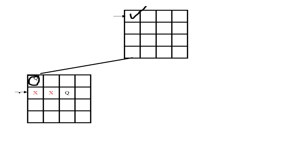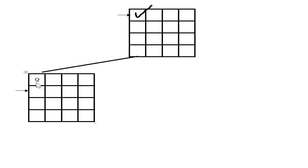After placing the first queen, we move to the next row and place the second queen. In the second row, we check where we can place the queen. Immediately below the first queen is not possible — the first queen attacks vertically. The adjacent diagonal position is also not possible. But the third column position in the second row is possible, so we place the second queen there.